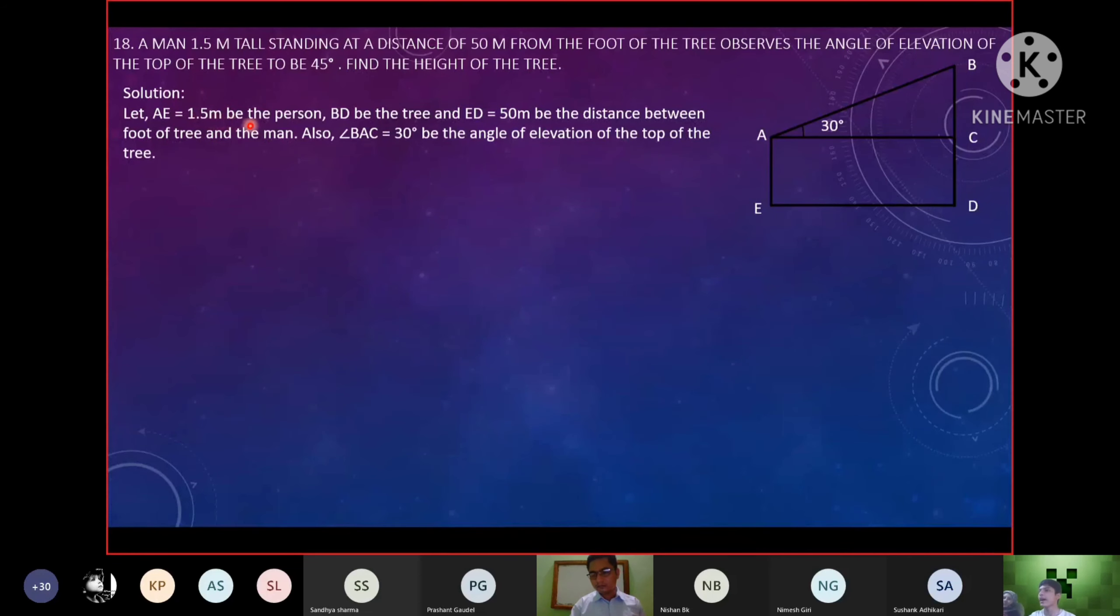AE is equal to 1.5 meters. Now, the area is a person. BD is equal to 3 and ED equals to 50 meters. The distance is equal to 30 degrees. The angle is equal to 30 degrees.